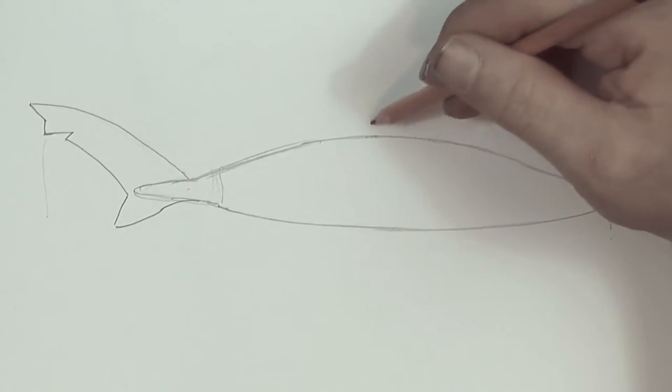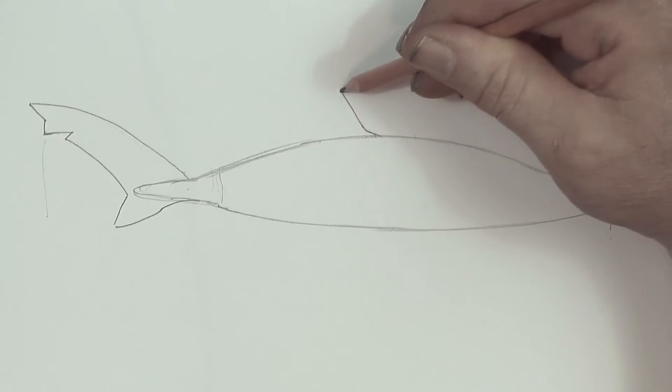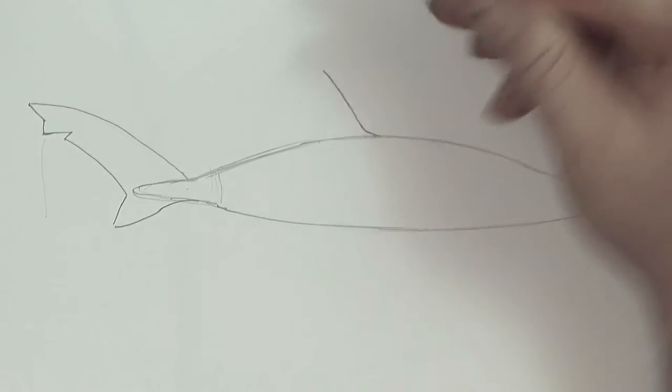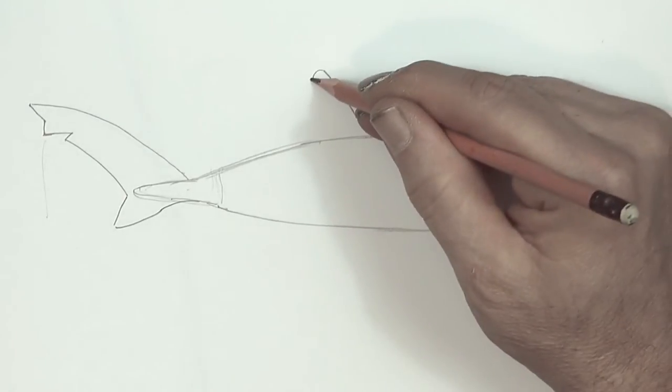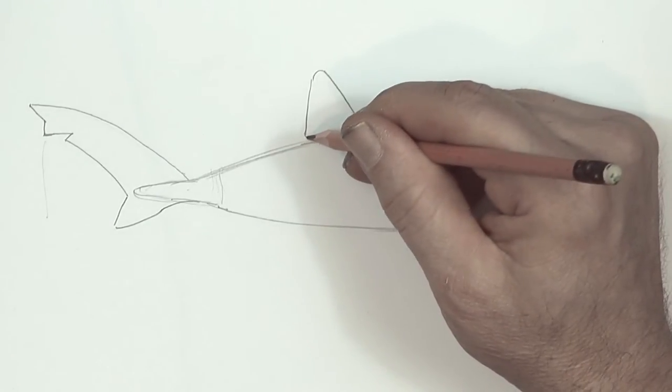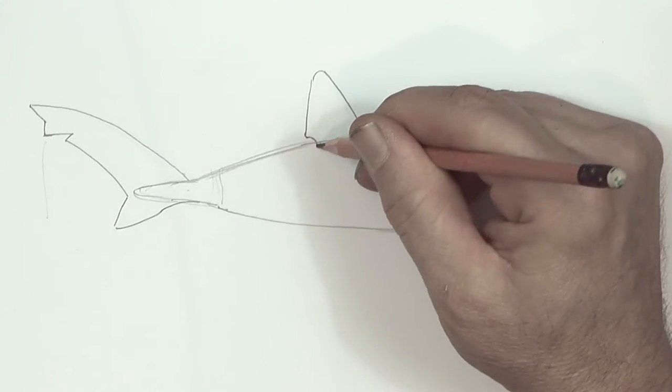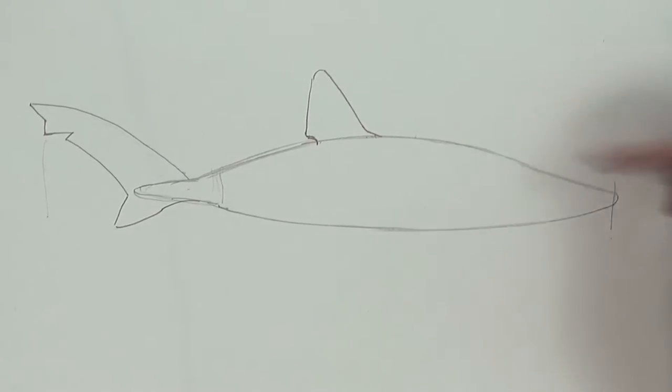Let's go to the dorsal fin. A little bit of a curve there, then up, round it off there, down, and then a tiny curve there, and a tiny one there, so I want it that way, and then that way. That's the dorsal fin.